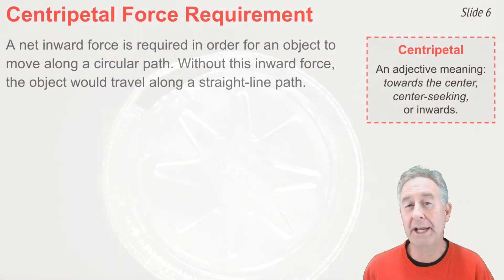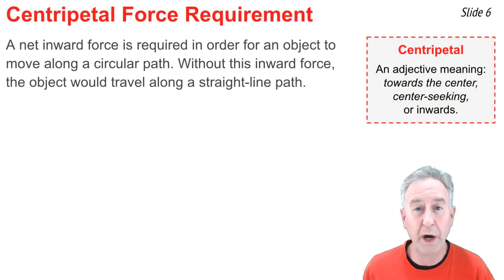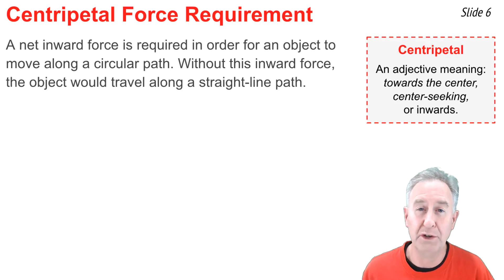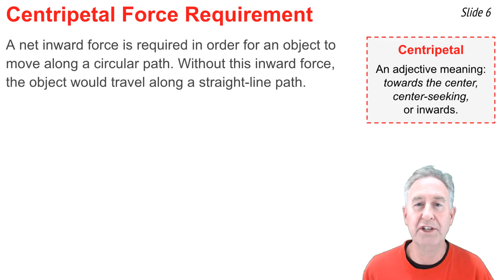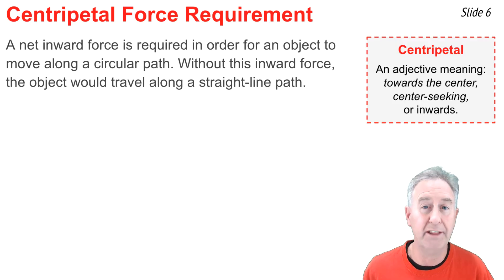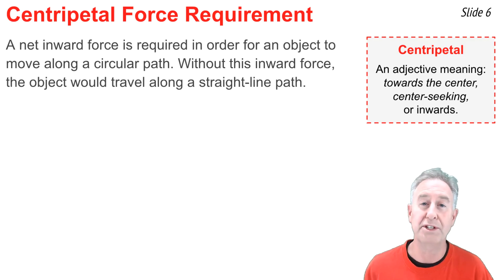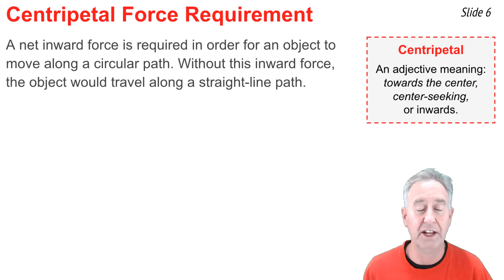A net inward force is required in order for an object to travel along a circular path. Without this inward force, an object would travel along a straight line path tangent to the circle. This is known as the centripetal force requirement. The word centripetal means towards the center, center-seeking, or inwards.